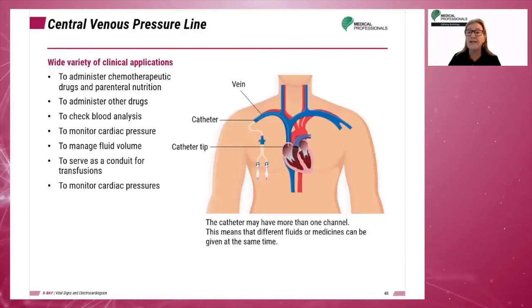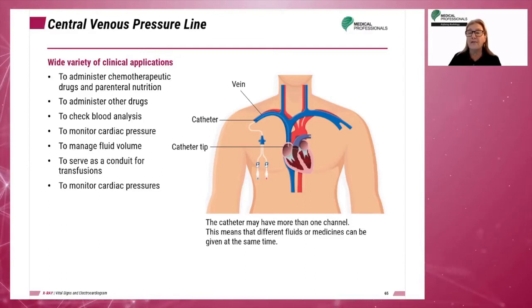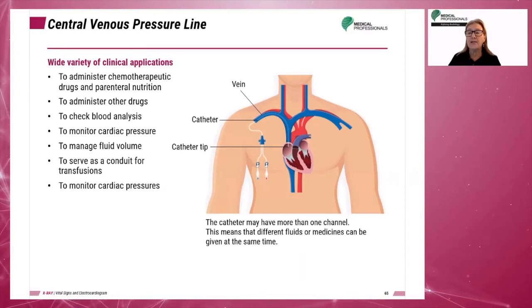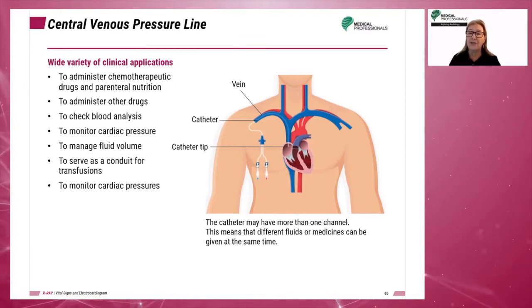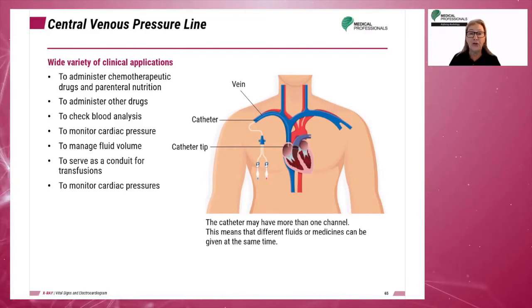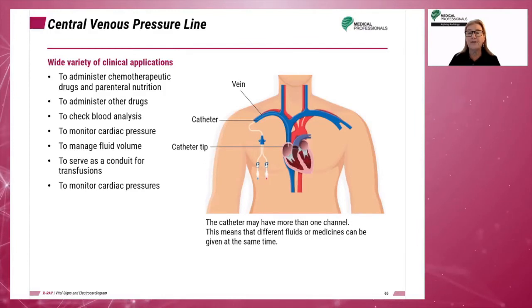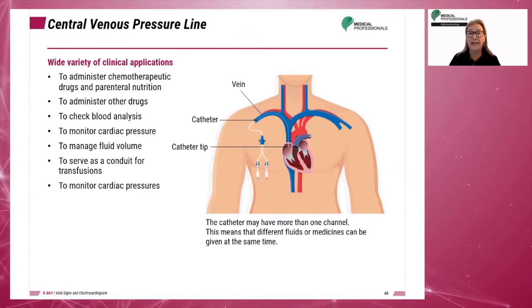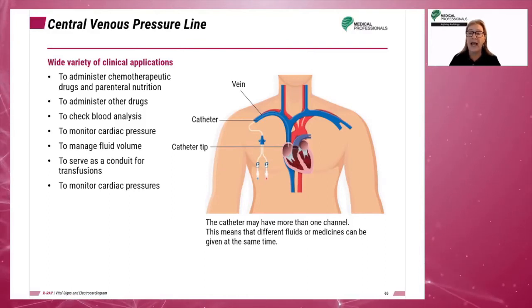Central venous pressure lines are catheters inserted into a large vein. There are three types of CVP lines: tunneled lines, peripherally inserted lines such as PICC lines, and implanted ports. They can be used to administer chemotherapeutic drugs and parenteral nutrition, administer other drugs, check body analysis, monitor cardiac pressure, manage fluid volume, serve as a conduit for transfusions, and monitor cardiac pressures. They are also called central venous catheters or venous access devices.